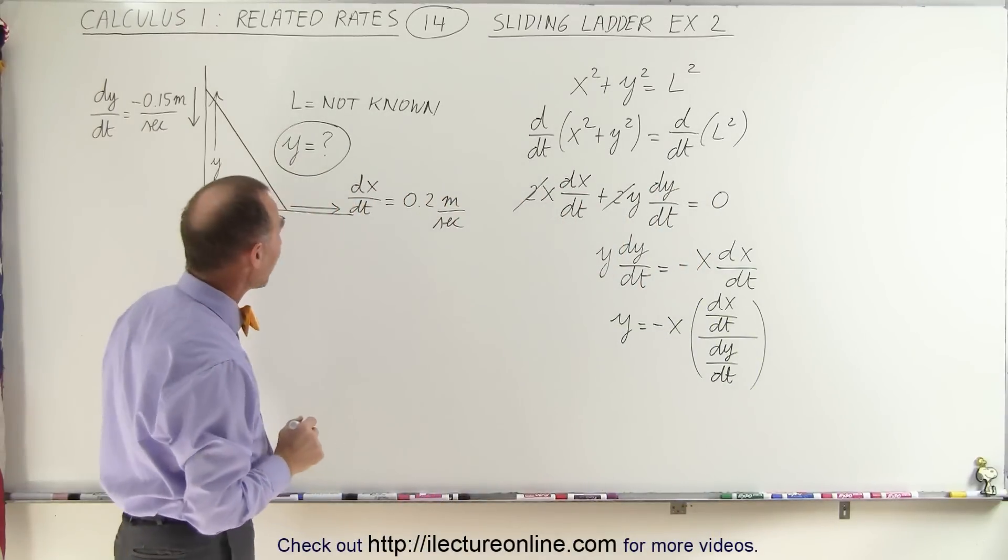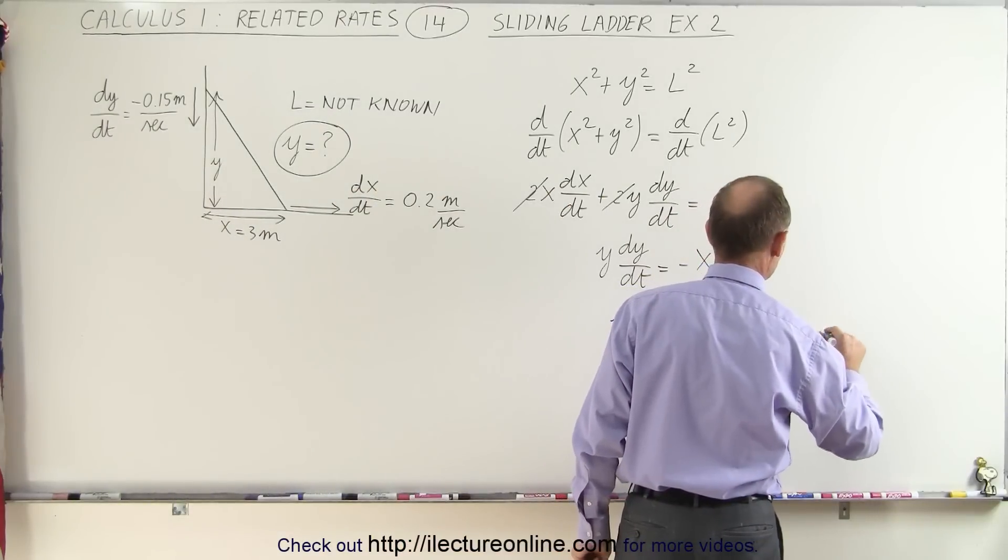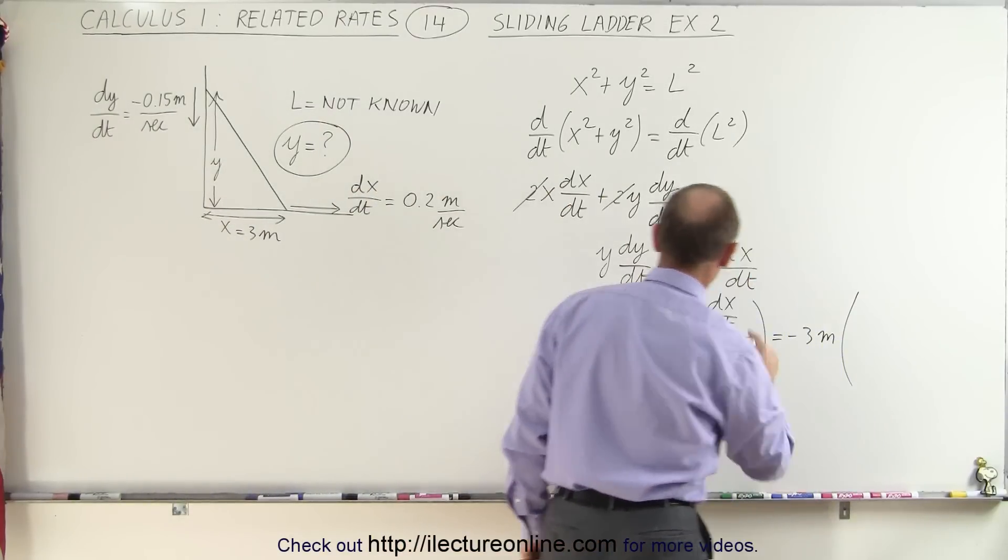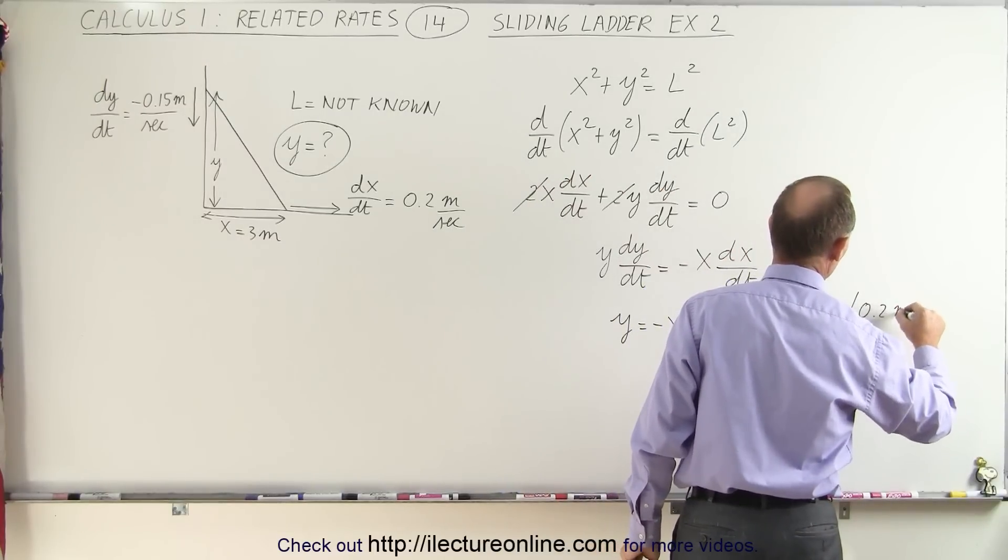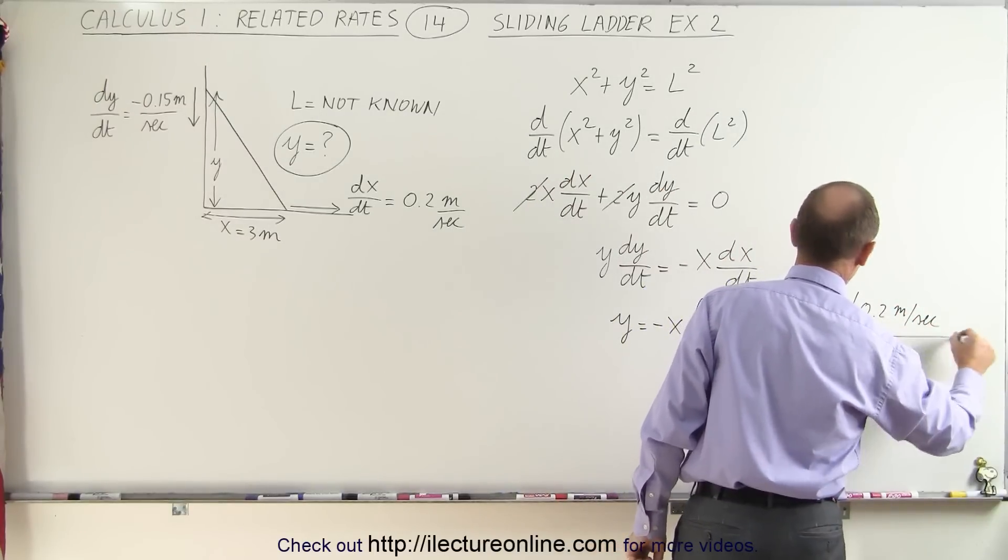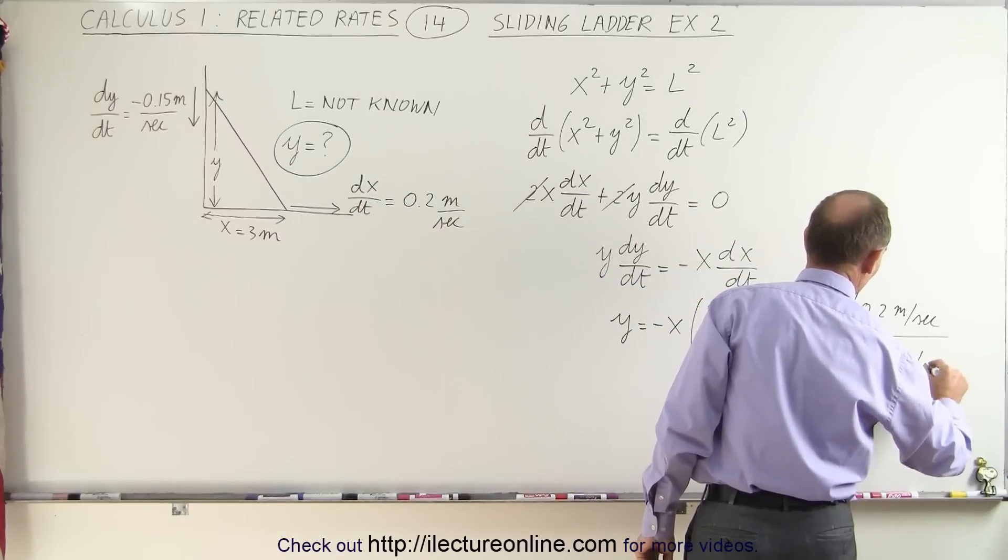Let's now plug in the numbers and see what we get. x was given to us as 3 meters. So this equals minus 3 meters times dx/dt, which is a positive 0.2 meters per second, and the dy/dt is negative 0.15 meters per second.